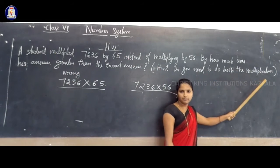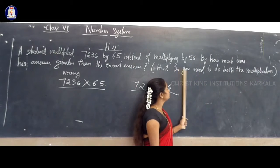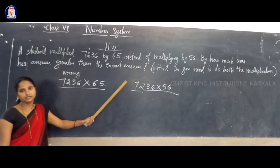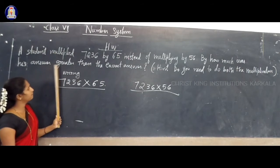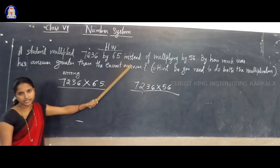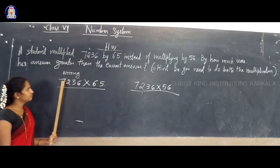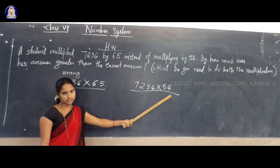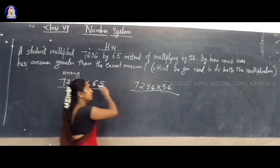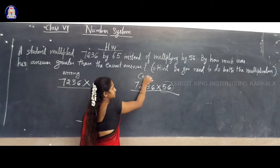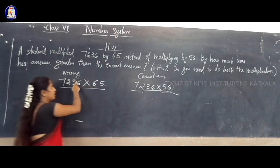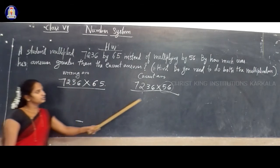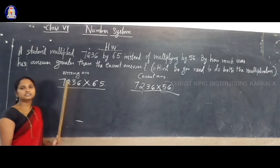Do you need to do both the multiplications? Yes. We have to do both the multiplications; otherwise, we cannot find the greater value. We cannot compare the wrong answer and right answer. So, you have to multiply both numbers — 7236 by 65 and 7236 by 56. Multiplying by 56 gives the correct answer, and multiplying by 65 gives the wrong answer. You will get one answer from each. That answer you have to find out.